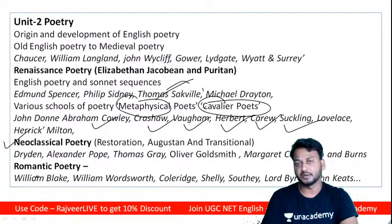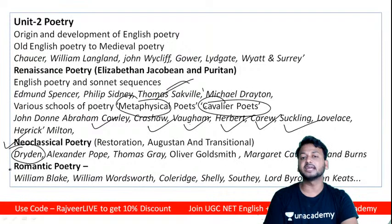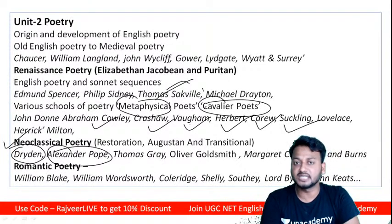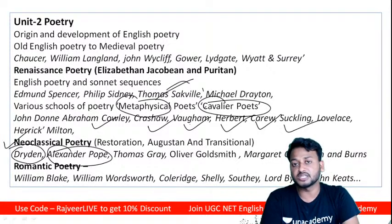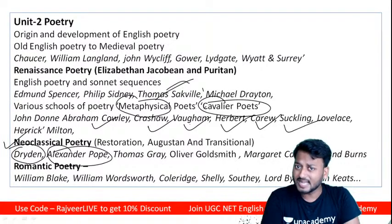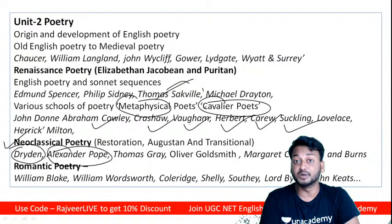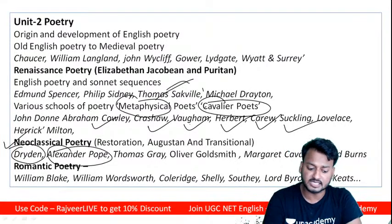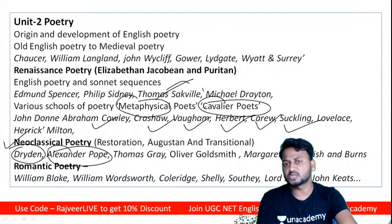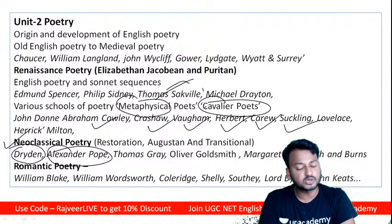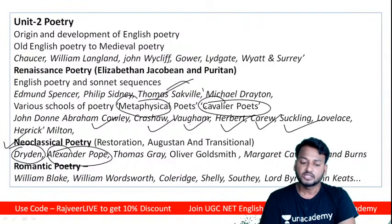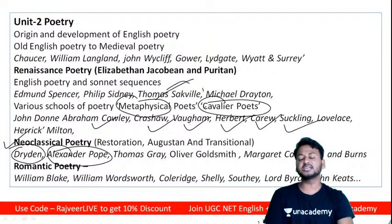In Neoclassical poetry: Dryden and Alexander Pope are absolutely critical. Pope wrote mock-heroic poetry. Thomas Gray wrote 'Elegy Written in a Country Churchyard.' Oliver Goldsmith is there. Robert Burns is important. Jonathan Swift also wrote poetry. These are the most important figures you must cover from Neoclassical poetry.